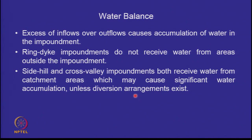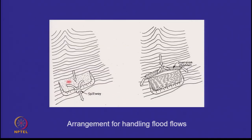In a side hill impoundment, water tends to come in and the area is already full with slurry water, so the level will increase and you will need a spillway or diversion channels. So any water coming down the hillslope should be diverted to the sides and not enter your ash pond. This is important because if the water level rises, the phreatic line in the embankment rises, causing stability issues.